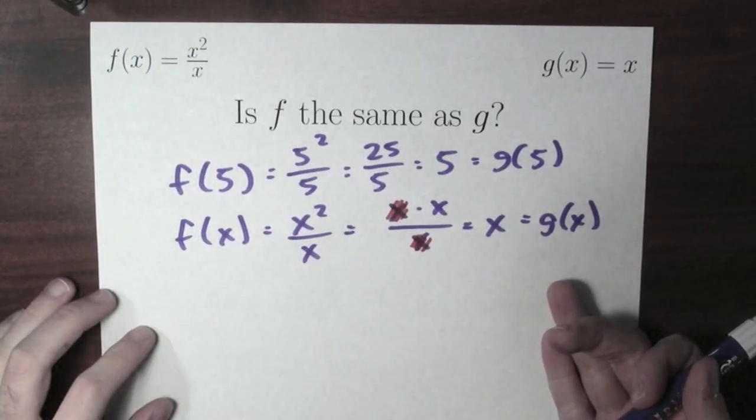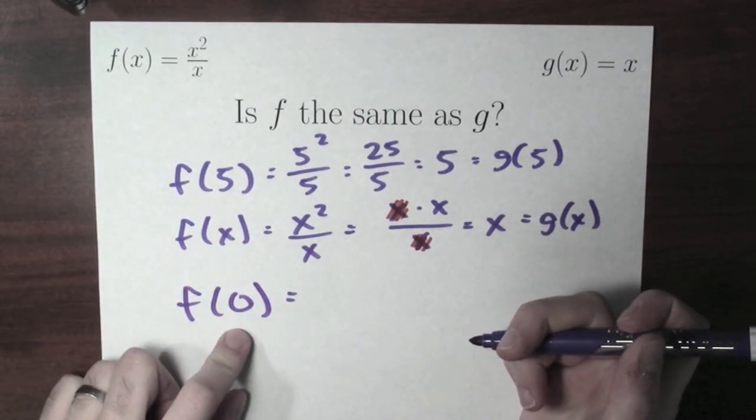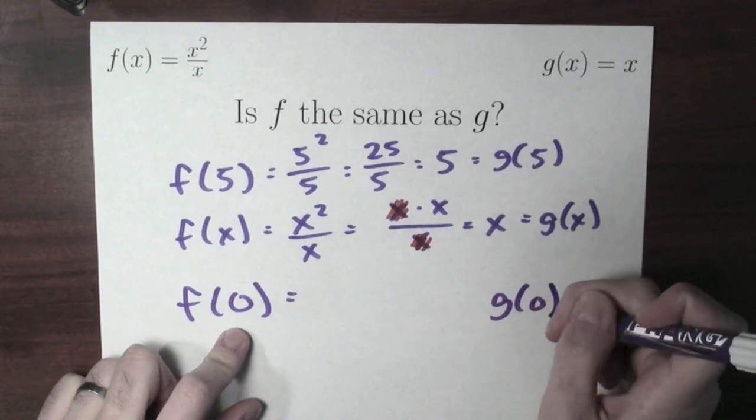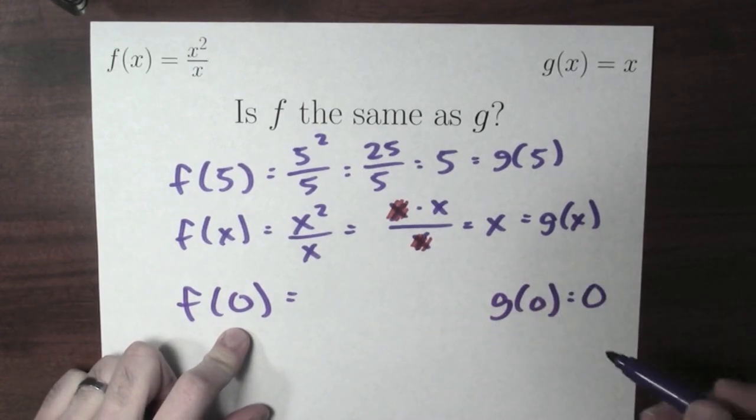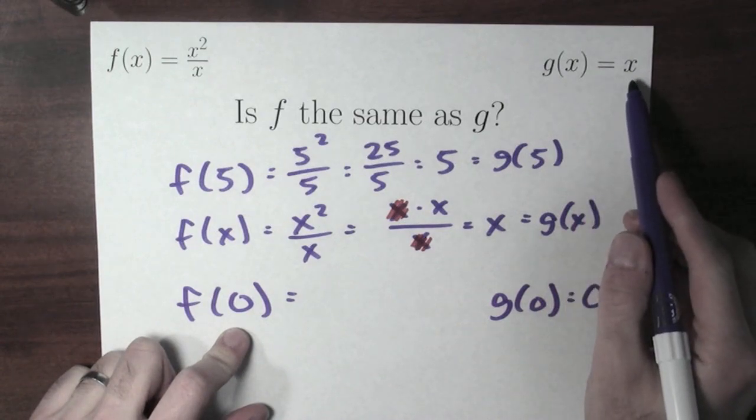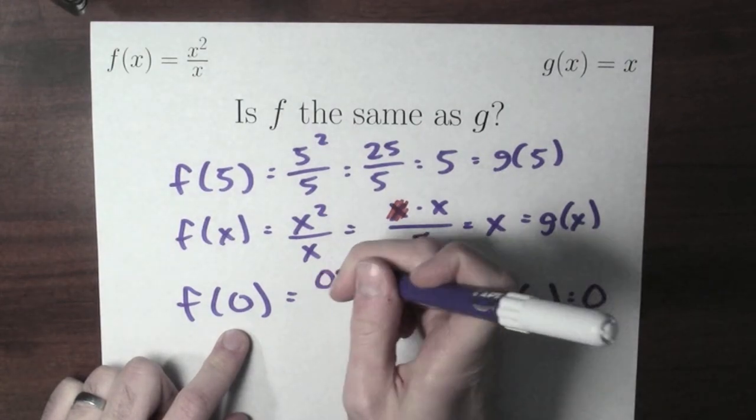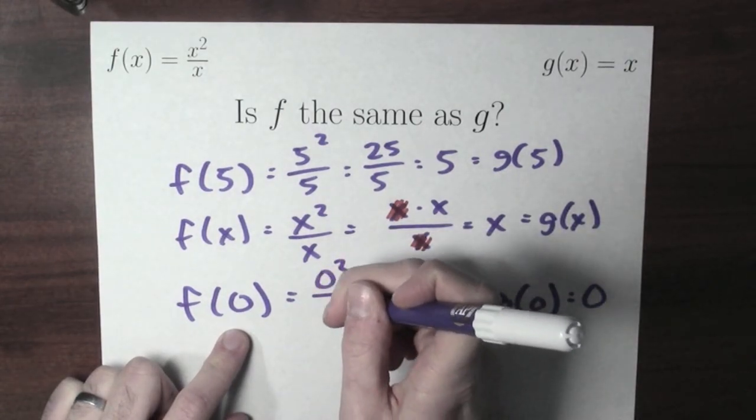But not so fast. What happens if you plug in 0? What's f of 0? Well, I know what g of 0 is. g of 0 is 0. 0 is in the domain of g because 0 makes sense for this rule. But what's f of 0? Well, that would be 0 squared over 0.